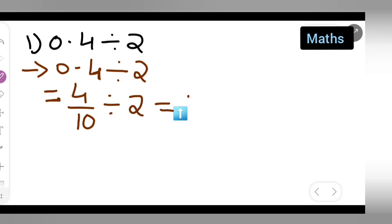Now this is equal to 4 upon 10, write it as it is. How are you going to divide 4 upon 10 divide by 2? Just take the reciprocal of this, which is 1 upon 2. Reciprocal of 2 is nothing but 1 upon 2.